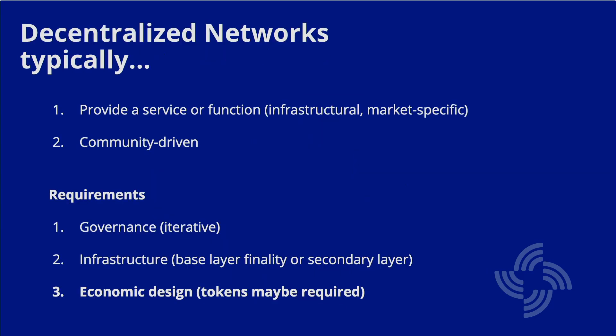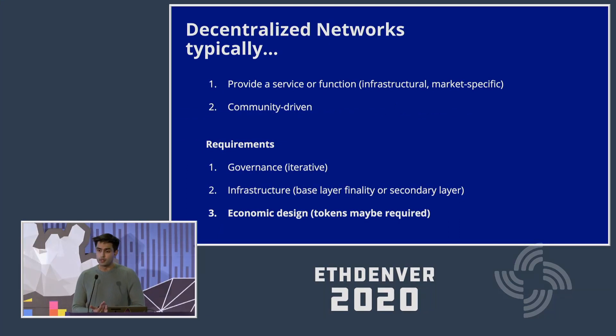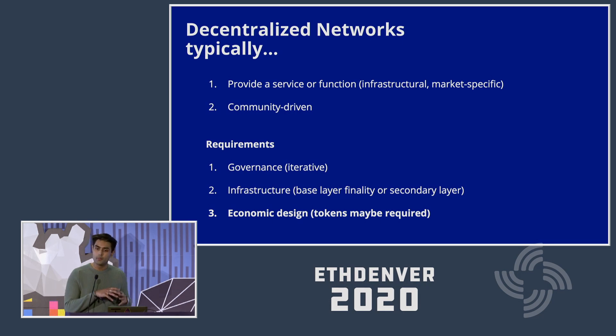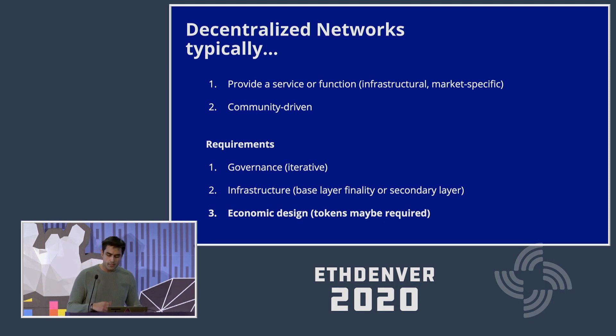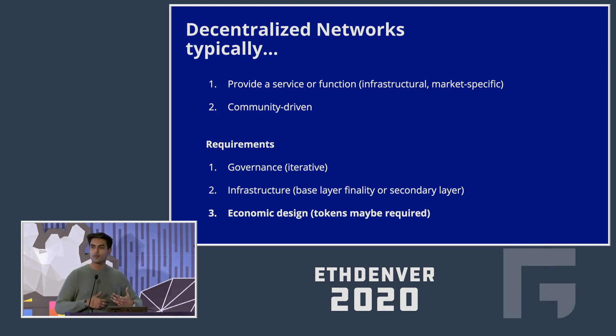To answer those questions, we need to zoom out and look at decentralized networks as a whole. The key defining characteristics are: they usually provide a service or a function — either an infrastructure layer function like a second layer scaling solution such as Scale, or market-specific like prediction markets such as Augur. The second most important thing is that a decentralized network needs to be community driven, allowing more stakeholders to get involved with governance and how things are used on the network.